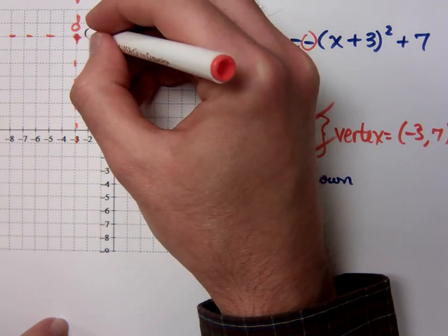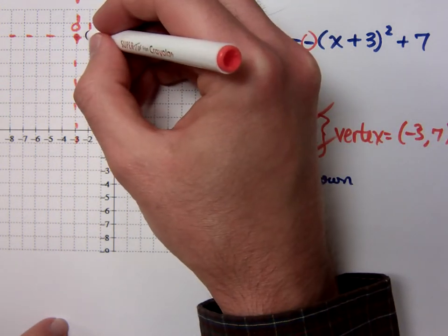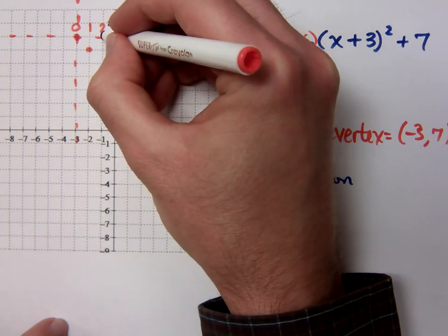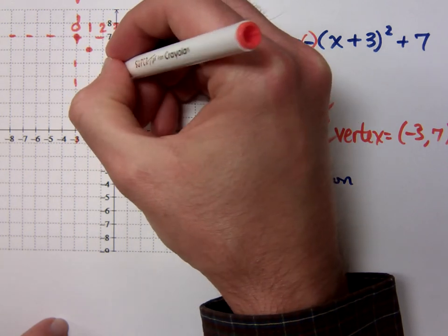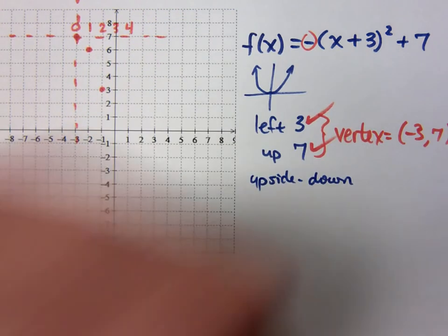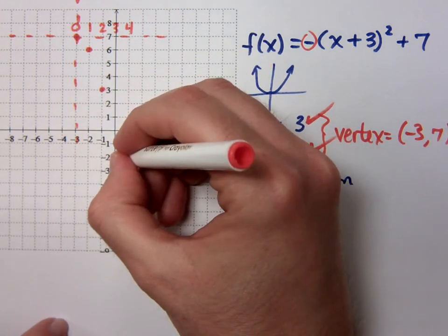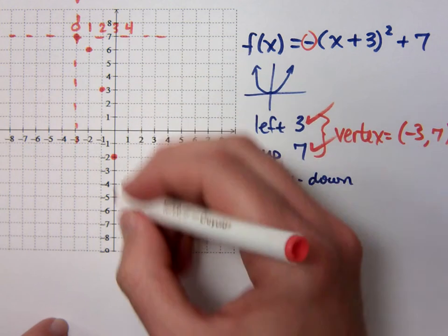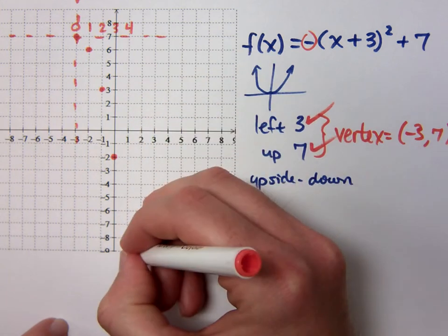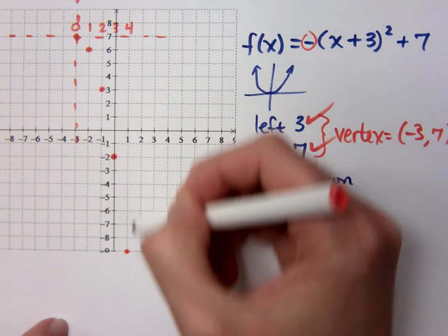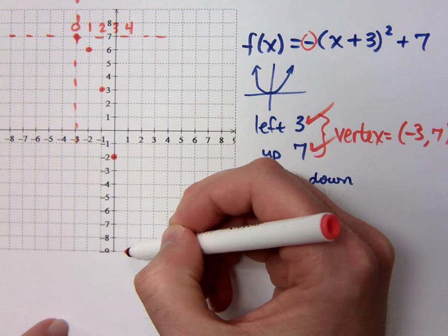So what's 1 squared? 1. What's 2 squared? So down 1, 2, 3, 4. What's 3 squared? 9. What's 4 squared? 16 would take you all the way to the bottom right here, because you've got 7 and 9 more units, which is 16.